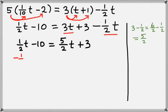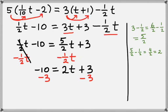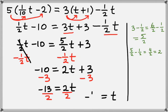Now we want to get all the t's on the same side, so let's subtract 1 half t from both sides. On the left those cancel, leaving us with negative 10. On the right, 5 halves t minus 1 half t — the denominators are the same, so we subtract the numerators to get 4 halves, which is 2. So on the right we have 2t plus 3. We subtract 3 from both sides, leaving us with negative 13 equals 2t. Finally, we divide by 2, and we get t equals negative 13 halves.